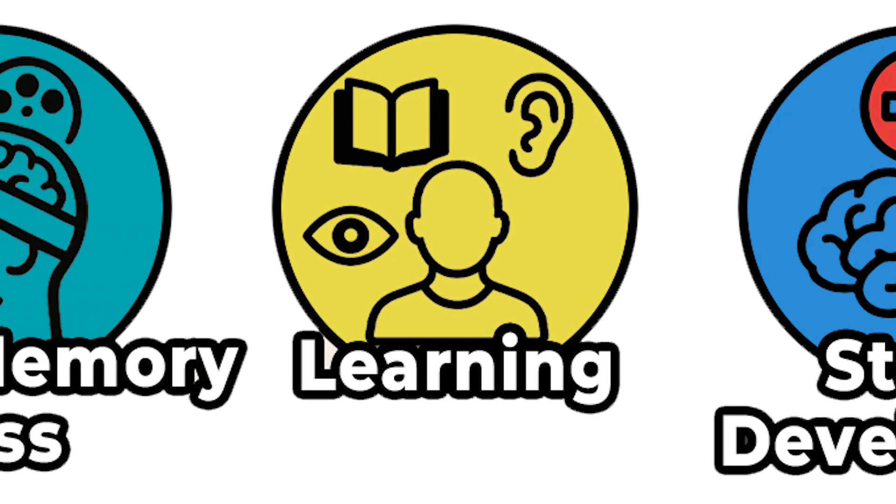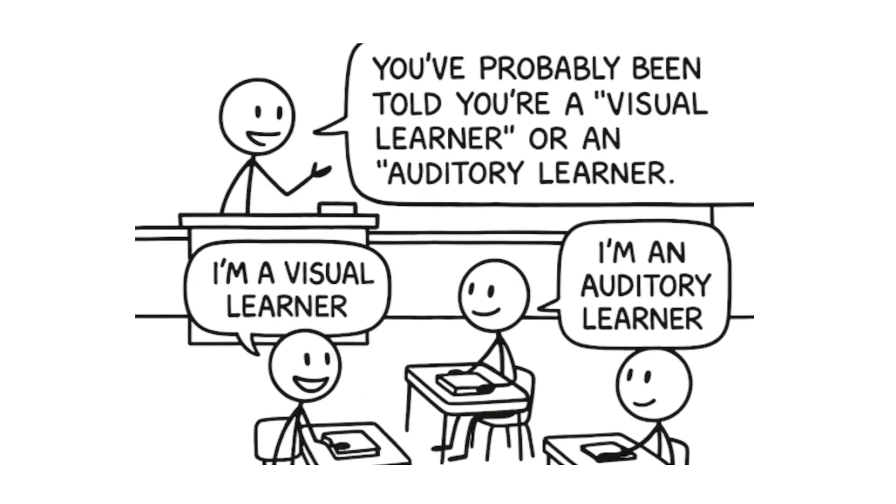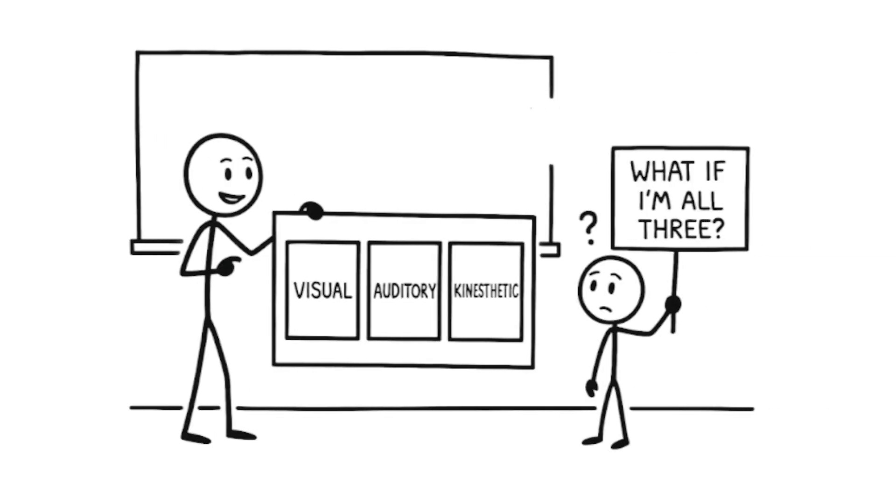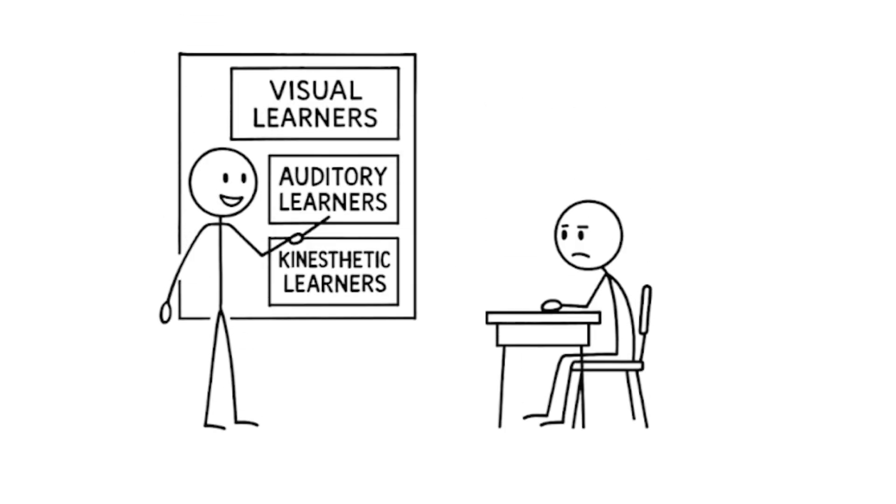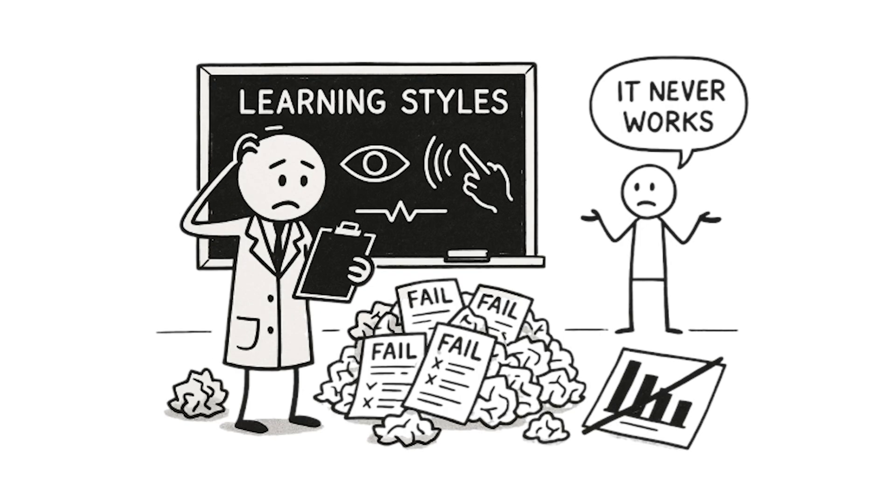Everyone learns best according to their learning style. You've probably been told you're a visual learner or an auditory learner. Schools love sorting kids into these categories and tailoring lessons to match. Sounds logical, right? Problem is, there's zero evidence this actually works. Scientists have tested this learning styles thing over and over, and it never works.